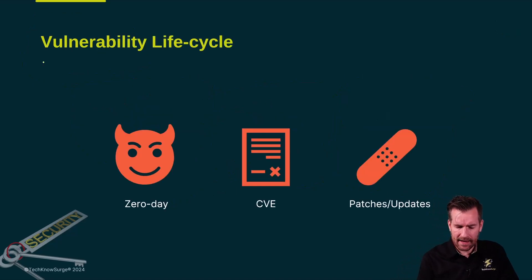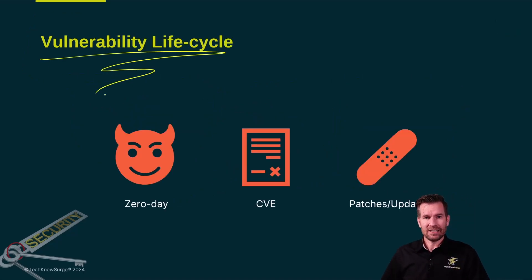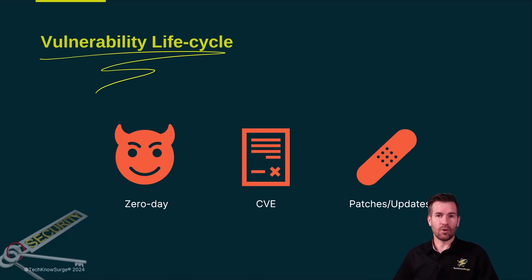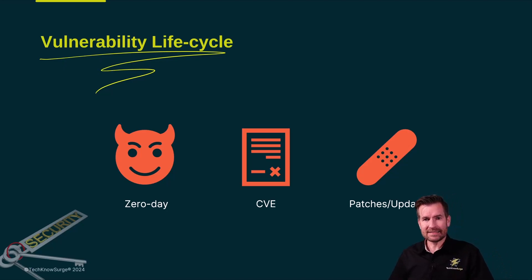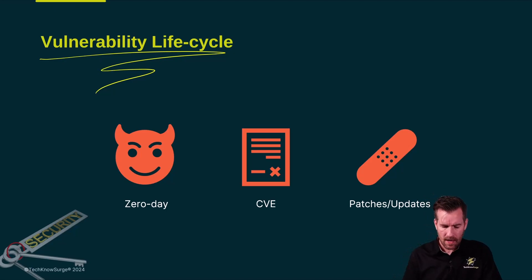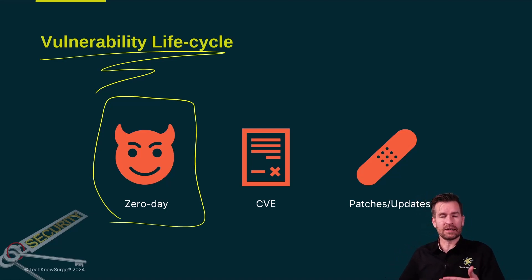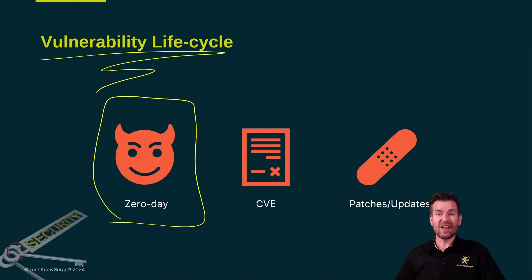For many of those categories, there's a vulnerability life cycle. Let's use software as a great example — specifically the firmware on that switch. Let's say the firmware gets released with some sort of vulnerability. It starts out at zero day, called zero day because the developers don't realize there's a vulnerability in the firmware — otherwise they wouldn't have released it — so they've had zero days to fix that vulnerability.